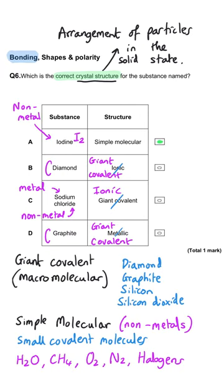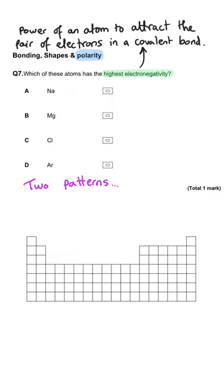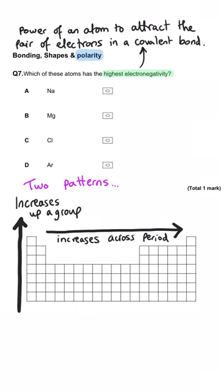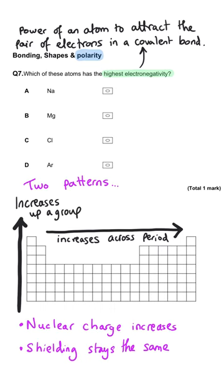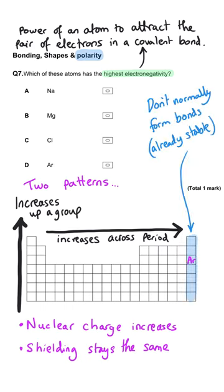Which of these atoms has the highest electronegativity? Electronegativity is the power of an atom to pull the bonding pair of electrons towards itself in a covalent bond. Two patterns to know: it increases going up a group, and it increases across a period — because nuclear charge increases while shielding stays the same. We disregard noble gases because they have low electronegativity as they don't readily form covalent bonds. Working across the period, sodium comes first, then magnesium — neither the highest — and the last element before the noble gases is chlorine, so that is the correct answer.